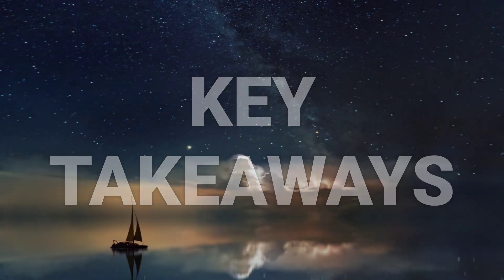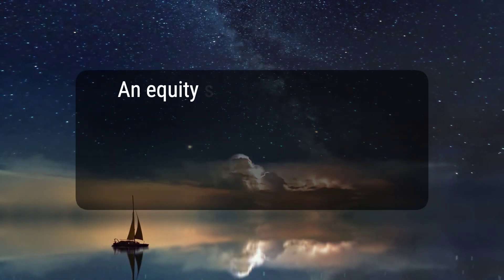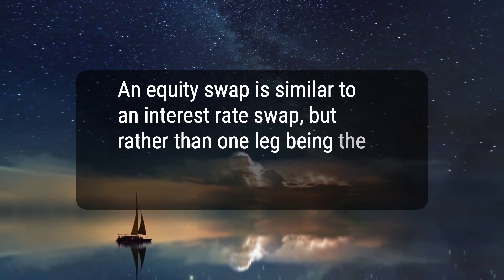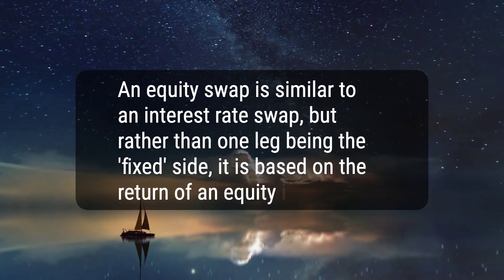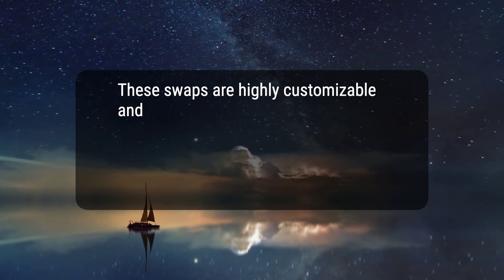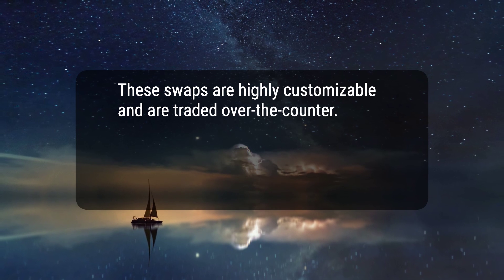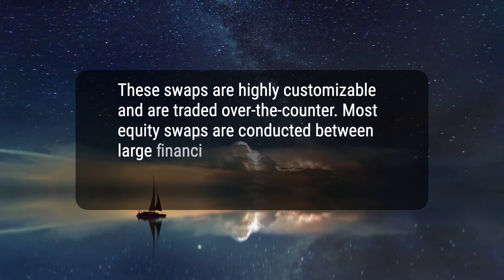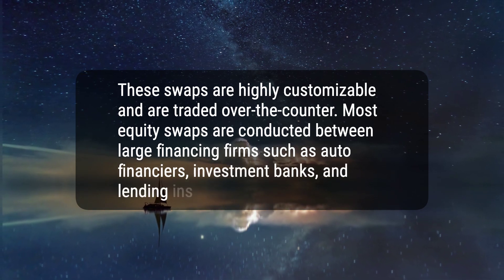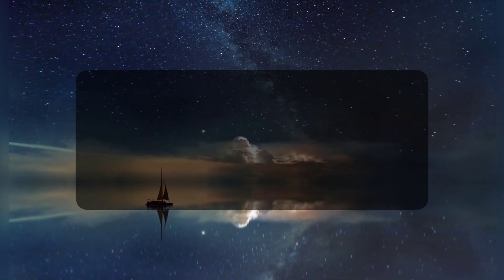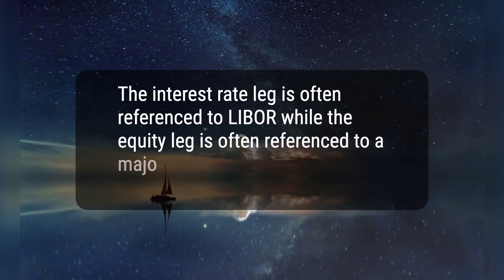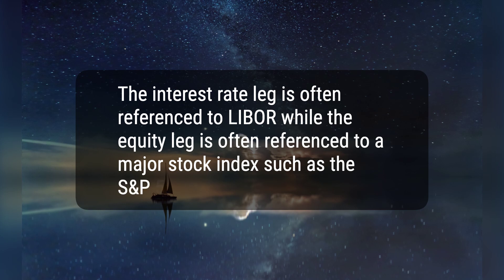Here are three key takeaways. 1. An equity swap is similar to an interest rate swap, but rather than one leg being the fixed side, it is based on the return of an equity index. 2. These swaps are highly customizable and are traded over the counter. Most equity swaps are conducted between large financing firms such as auto financiers, investment banks, and lending institutions. 3. The interest rate leg is often referenced to LIBOR while the equity leg is often referenced to a major stock index such as the S&P 500.